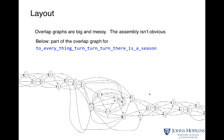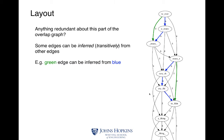Once you have the overlap graph constructed, you can start doing layouts and try to resolve and simplify it. Overlap graphs can look complex — for example, using the sentence 'to everything turn turn turn there is a season,' you can see how the repeat of 'turn turn turn' causes all of these ambiguous paths. You've taken the sentence, fragmented it into smaller pieces, and then connected them up. During layout, redundant paths can be identified — if a green node that connects via an intermediate can be represented by a direct blue directed path, you can get rid of the green path and simplify your graph by removing redundant steps.